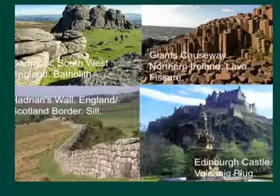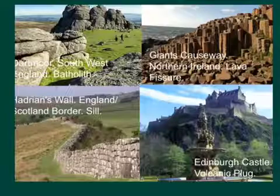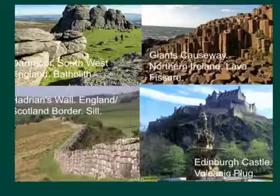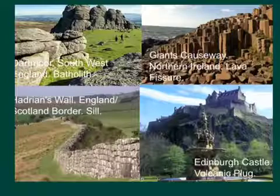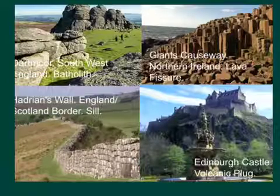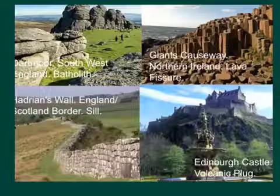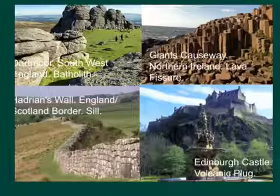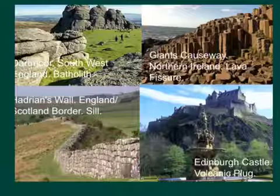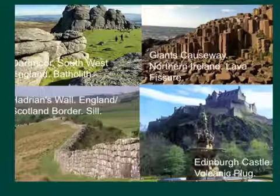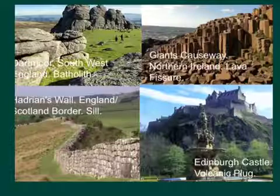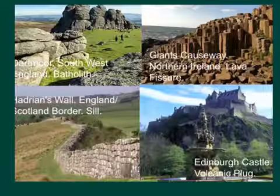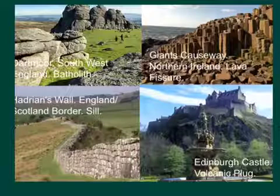To summarise: a batholith on Dartmoor in southwest England, which is an intrusive volcanic landform; Hadrian's Wall on the England-Scotland border, which is an example of a sill — a horizontal volcanic intrusion; Giant's Causeway, a lava fissure with basalt columns in Northern Ireland; and finally Edinburgh Castle, which is a volcanic plug.